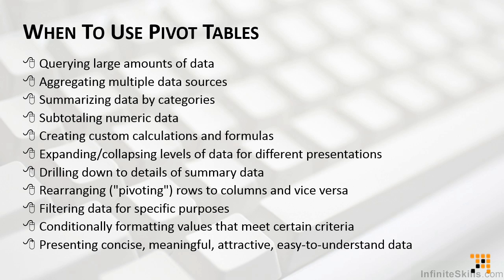In short, pivot tables do three things. They simplify data by categorizing it by one or more fields. They compact it by taking out the redundancy and even allowing us to view values both across columns as well as down rows. And they summarize by providing calculations for the values we choose. And they do it all with just a few clicks and possibly a couple of drags across the screen.